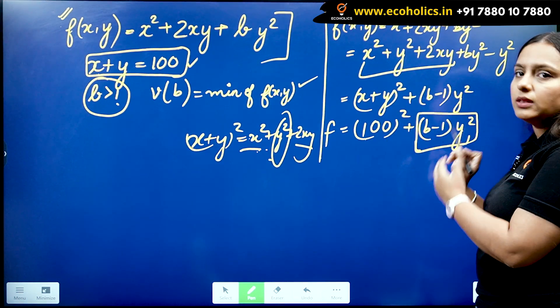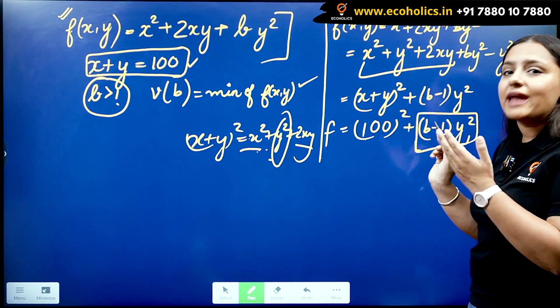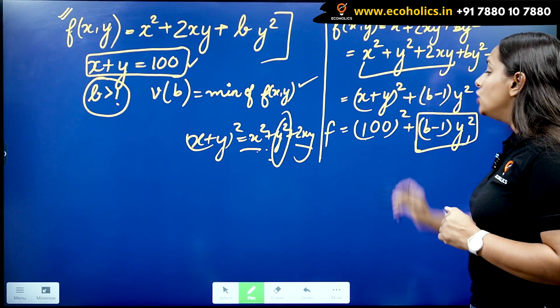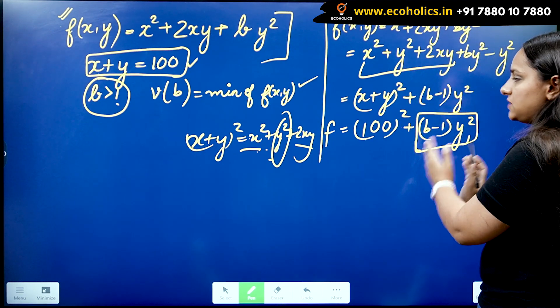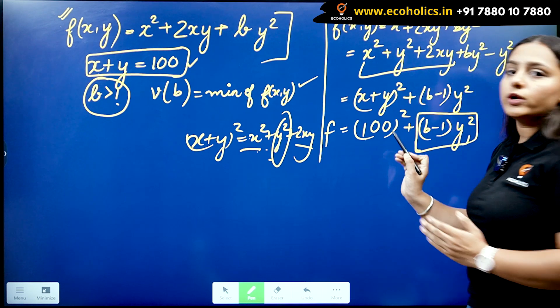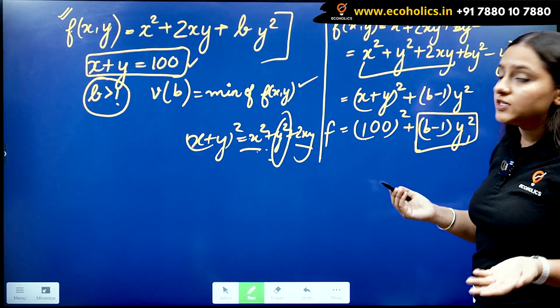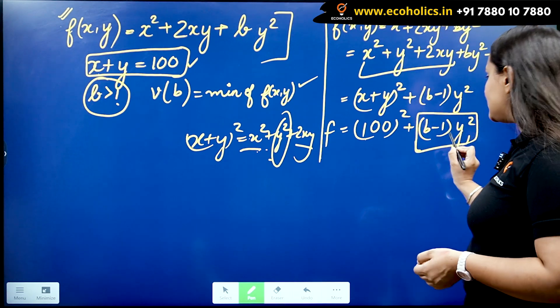Because b is going to be greater than 1, y² will always be positive, so this term cannot be negative. So it's always going to add to the square of 100, never it's going to subtract something from it.